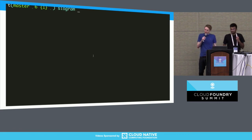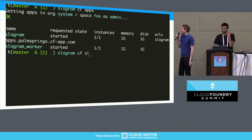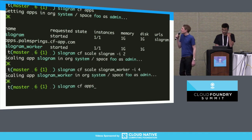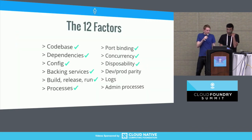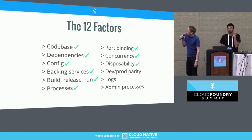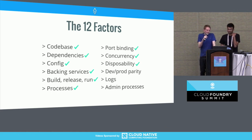Now if we run cf apps, we have two separate apps: Slowgram and Slowgram Worker. This means we can scale both independently — we're scaling the web server up to two and the background worker up to four. Taking a quick step back, there are a few factors we haven't mentioned that are perhaps not as important for getting your application up and running on Cloud Foundry to begin with. And that's all we have time for today.